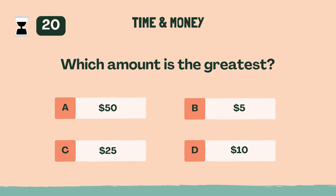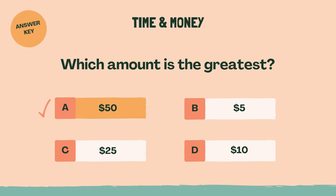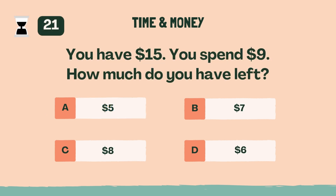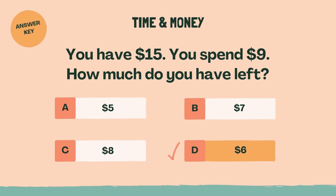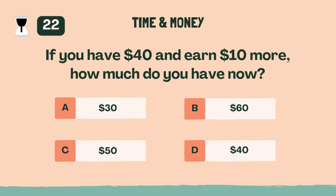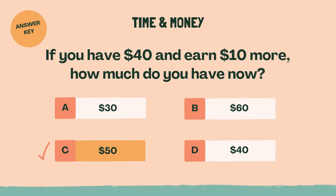Which amount is the greatest? A, 50 dollars. You have $15. You spend $9. How much do you have left? D, 6 dollars. If you have $40 and earn $10 more, how much do you have now? C, 50 dollars.